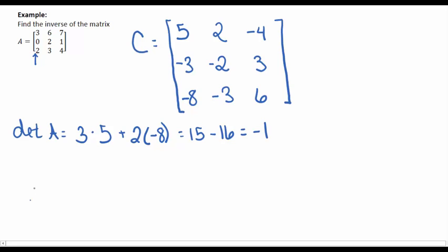To actually find the inverse, we multiply by 1 over negative 1 times the transpose of this matrix C. So 5, negative 3, negative 8; 2, negative 2, negative 3; negative 4, 3, and 6.